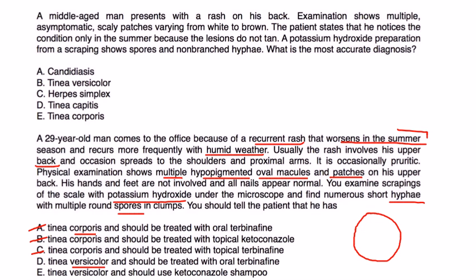The best treatment for tinea versicolor is something that will cover all the lesions in that area of the body. Most commonly, you use any of the azoles, and the most common of course is ketoconazole. It's given as a shampoo. So that would be the correct choice.